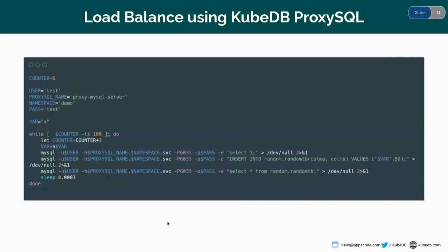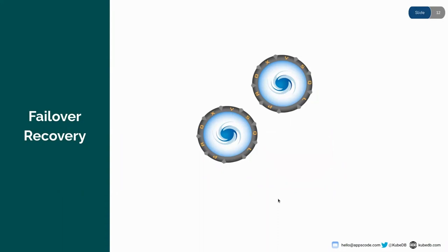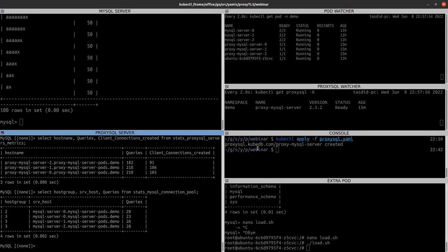Now another thing is failover recovery in case of ProxySQL clusters. A failover scenario: suppose you have a 3-node ProxySQL cluster and suddenly one node disappears or loses connection with the other nodes. What KubeDB operator does is create another ProxySQL pod, reconnect it with the other cluster nodes, resync, and after resyncing it will work as it was working before. Let's delete one pod and see if KubeDB ProxySQL is able to recover the failover.